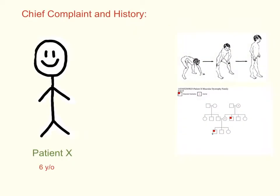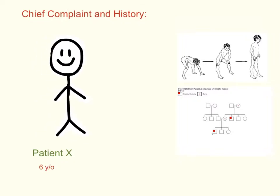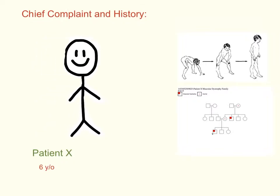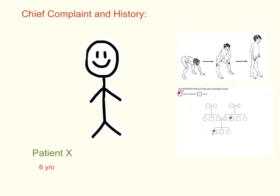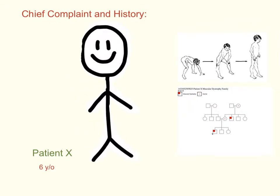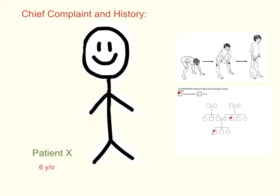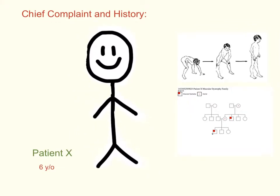Patient X is a 6-year-old child complaining of weakness in his legs. He has a problem balancing, walks on his tiptoes, and frequently falls. He also has difficulty running and climbing stairs. Patient X is also enrolled in his school's special education program because he has a poor attention span and struggles with math and reading.